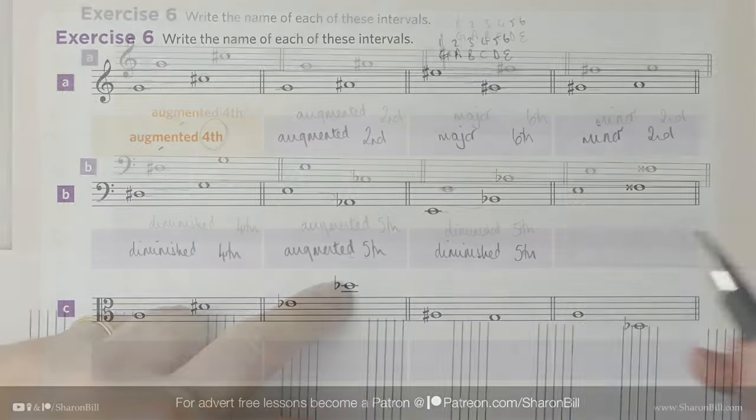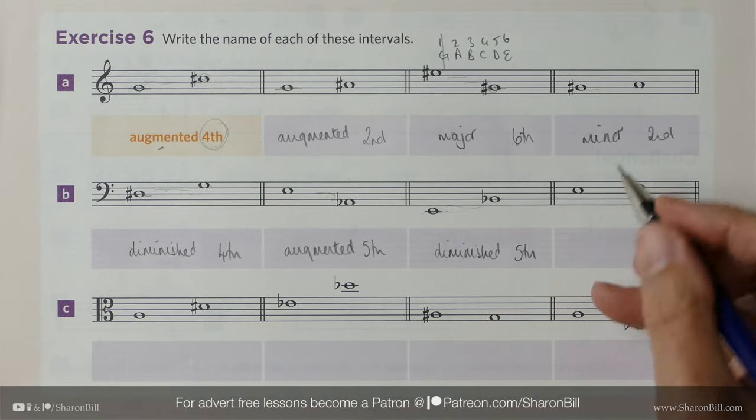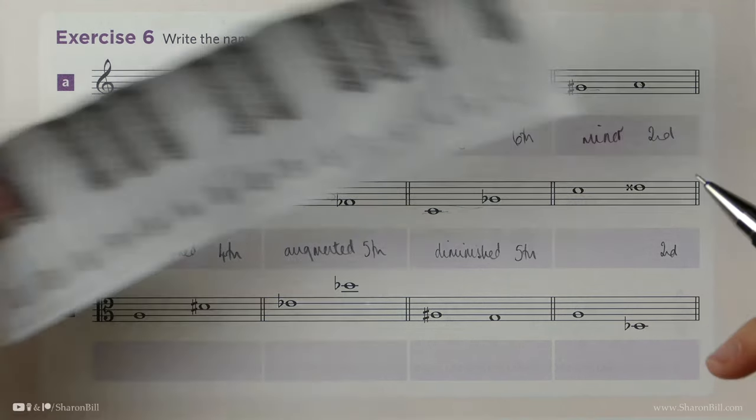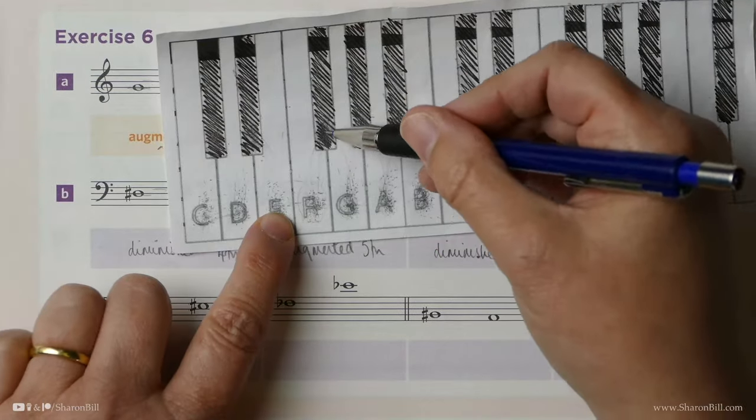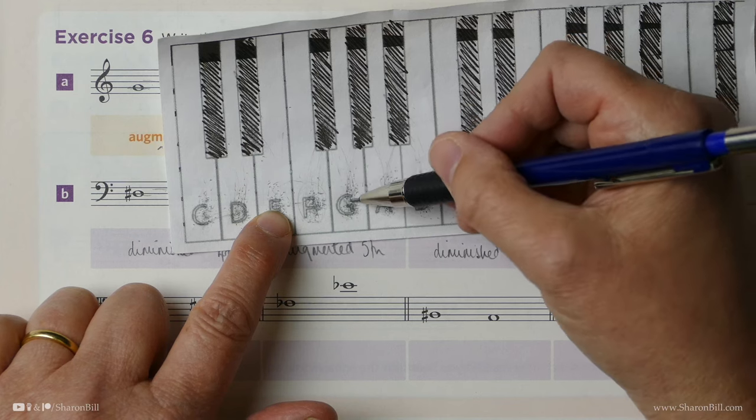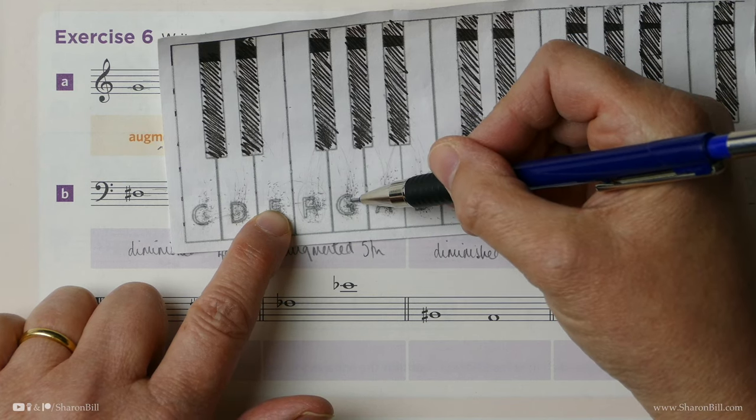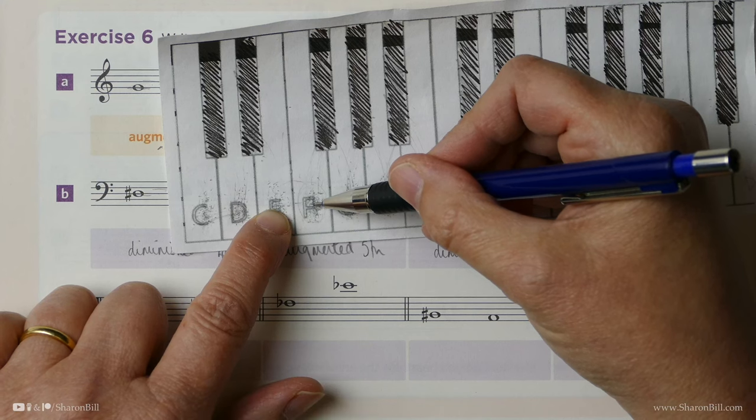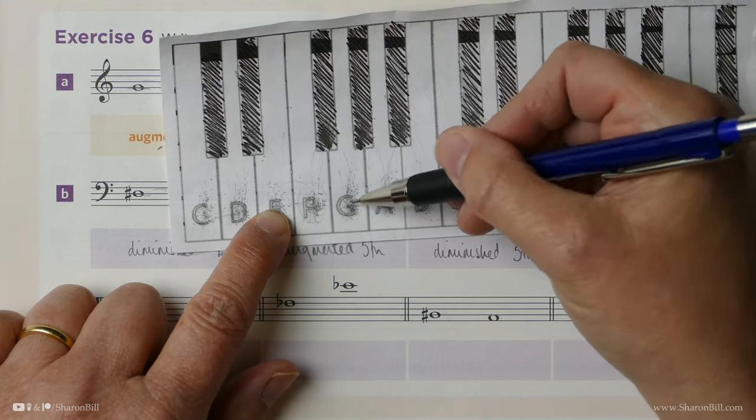There we go. Now here we have an E to an F of some sort. It's a 2nd of some sort. Now we know that E to F sharp is major. That's our full tone. However, it's F double sharp. So actually, it's an augmented. We've gone from minor, which is a semitone, major to augmented. It's an augmented 2nd.